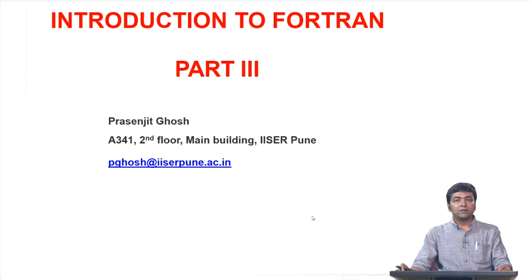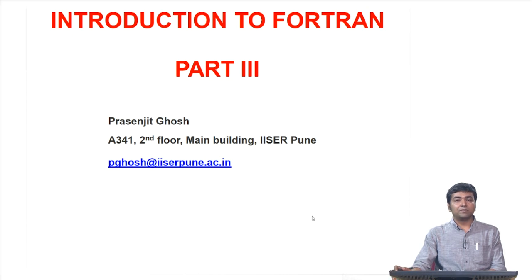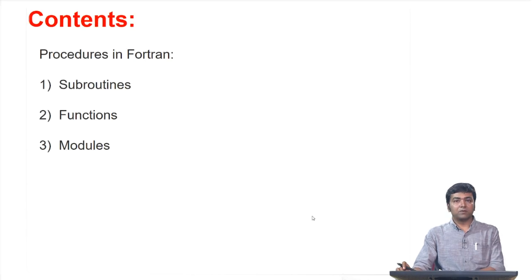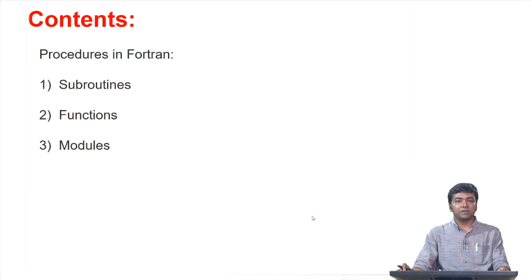Welcome back to the third part of this module. In the previous two parts we saw how to write a Fortran program and its basic attributes — for example, how variables are declared, how one does mathematical operations, some intrinsic functions built into Fortran, and the use of do loops and if loops. In this part we will talk about three more things, primarily called procedures in Fortran: subroutines, functions, and modules.